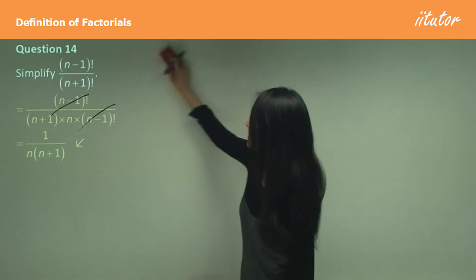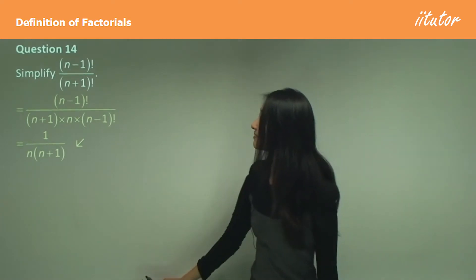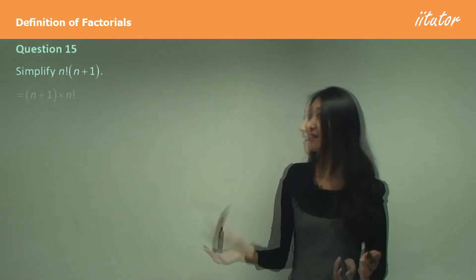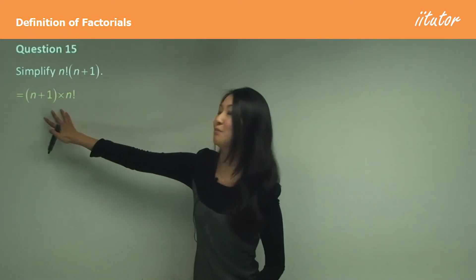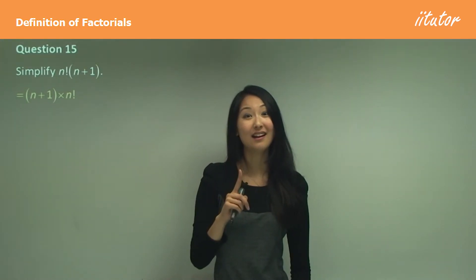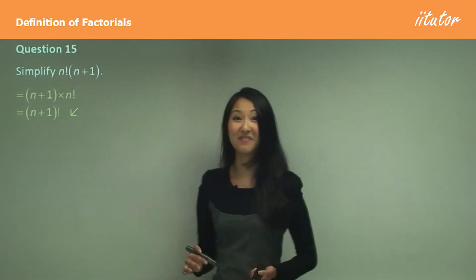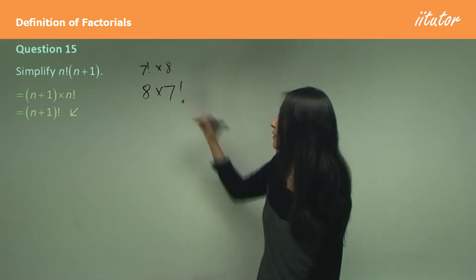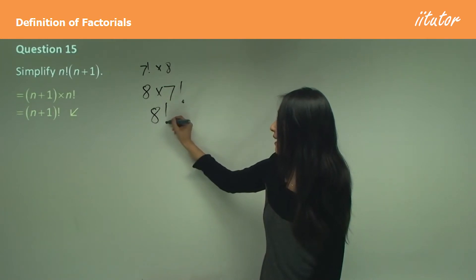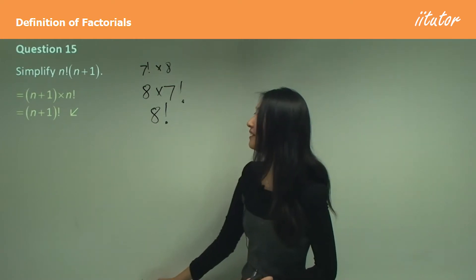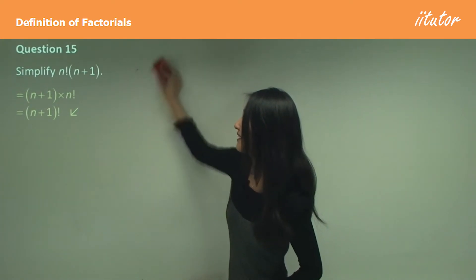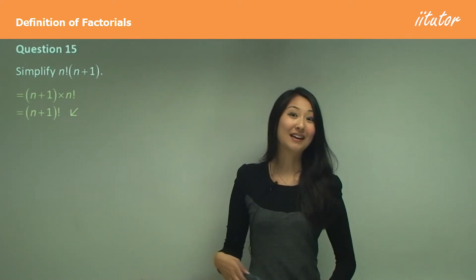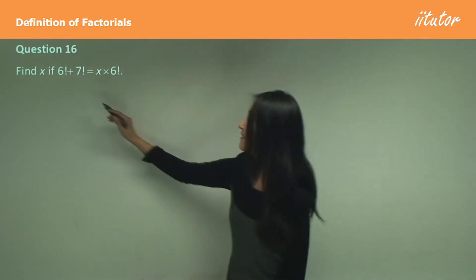The n's can get confusing — just remember you can always substitute a number in. Question 15: simplify n factorial times (n+1). Rearrange to (n+1) times n factorial. Since (n+1) is one more than n, this is just (n+1) factorial — the same way 8 times 7 factorial equals 8 factorial. So n factorial times (n+1) equals (n+1) factorial.